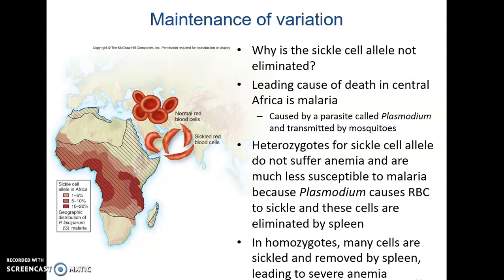Malaria is a protist transmitted by mosquitoes. Heterozygotes for the sickle cell allele do not suffer anemia, and they're also much less susceptible to malaria because the plasmodium causes red blood cells to sickle, and these are removed by the spleen before the parasite can reproduce. So because heterozygotes have an advantage in survival, the sickle cell allele remains in the population.